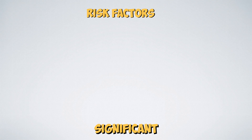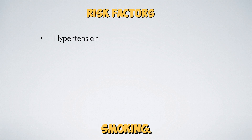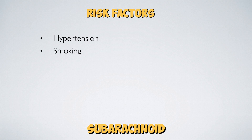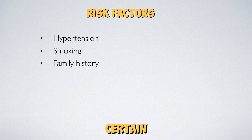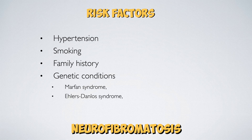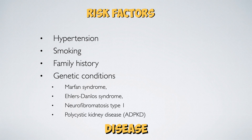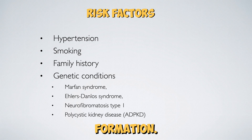The most significant risk factors for subarachnoid haemorrhage are a history of hypertension and smoking. Additionally, a family history of subarachnoid haemorrhage and certain genetic conditions such as Marfan syndrome, Ehlers-Danlos syndrome, neurofibromatosis type 1, and the presence of polycystic kidney disease substantially elevate the risk of aneurysm formation.